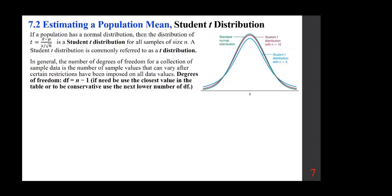The student t-distribution is a family of curves based on degrees of freedom, which is n − 1. When using a t-table, if the degrees of freedom is not listed, go to the closest value available. If it is in between two values, go with the lower one to be conservative.